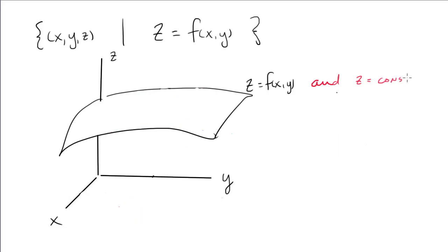Level curves is the intersection of the graph with Z equals a constant. Z equals a constant, of course, is a surface parallel to the XY plane.